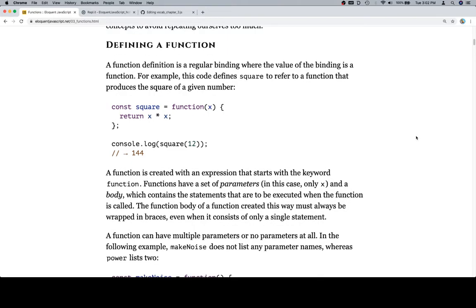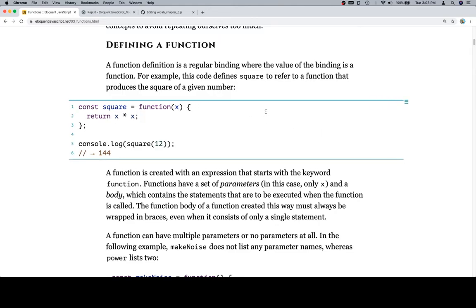Defining a function. A function definition is a regular binding where the value of the binding is a function. For example, this code defines square to refer to a function that produces the square of a given number. So we're using the const keyword to create a binding on square. We're assigning that binding to have a value of this function. It's going to take in a parameter x and return x times x.